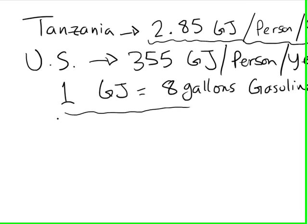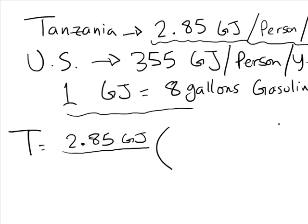And this tells us how many gigajoules require how many gallons of gasoline. So the first one, if we wanted to set it up for Tanzania, to set up the factor labeling, we know that it takes 2.85 gigajoules of energy on average per person per year. Now to set up the factor labeling, we know that for 1 gigajoule, it requires 8 gallons of gas.